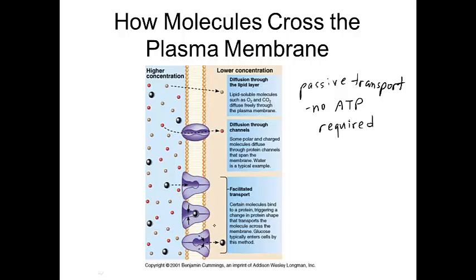Facilitated transport is a little different. There's an integral protein with a specific shape embedded in the membrane. When the molecule enters, it causes the protein to reconfigure its shape — it closes up on one end and opens up on the other — just because of the interaction between the molecule and the protein itself. It still doesn't require energy. Glucose is an example of a molecule that enters the cell by facilitated transport. It's called facilitated because facilitated means helped along — so proteins are needed, but no energy is required.